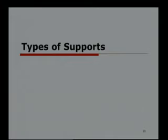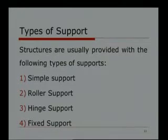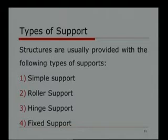Now we come to the different types of supports. As already mentioned, the supports are basically either in the form of a column or in the form of a wall. There are different types of supports. The first support is called a simple support, second is called a roller support, third is called a hinge support, and fourth is called a fixed support.